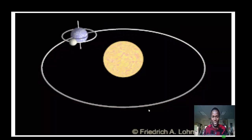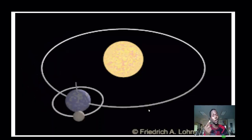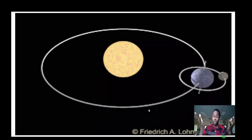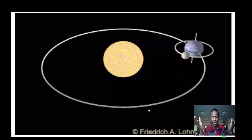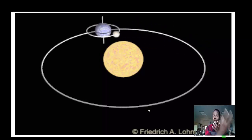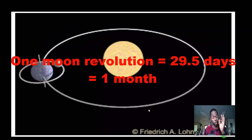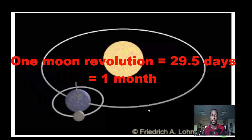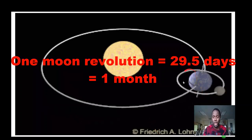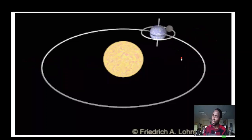The amount of time it takes for the moon to revolve around the Earth is called a month. In fact, the words 'month' and 'moon' are cognates. It takes the moon 29.5 days to revolve around the Earth completely in one revolution.